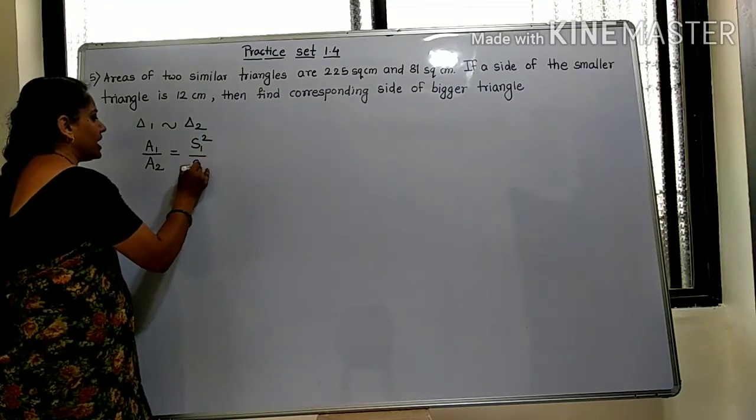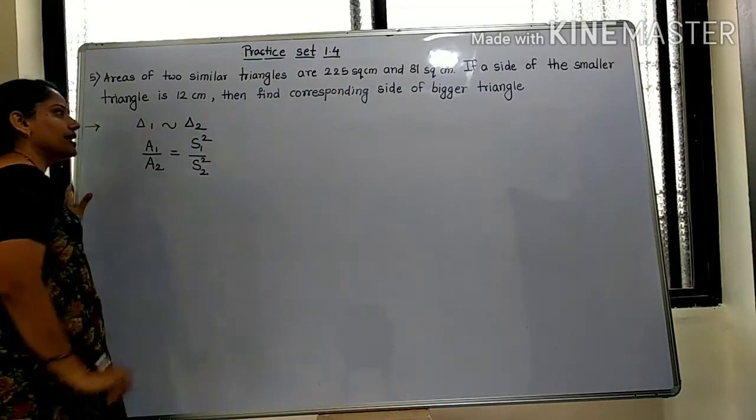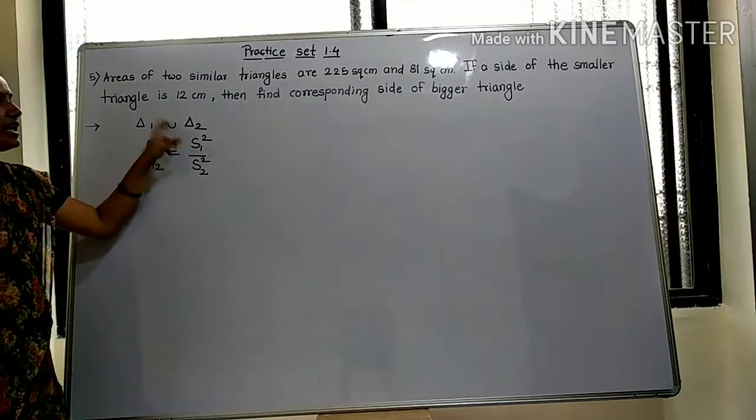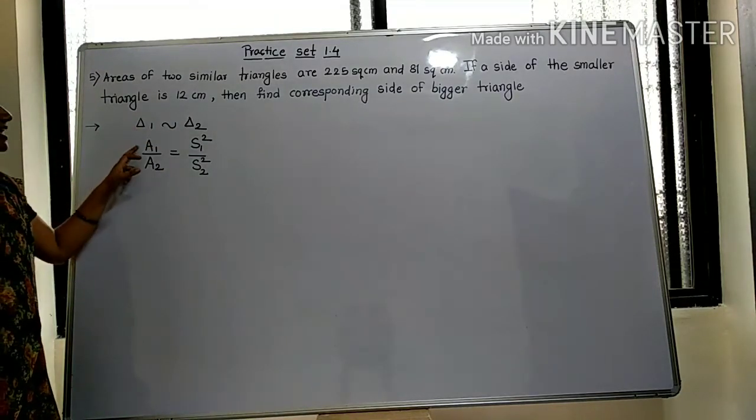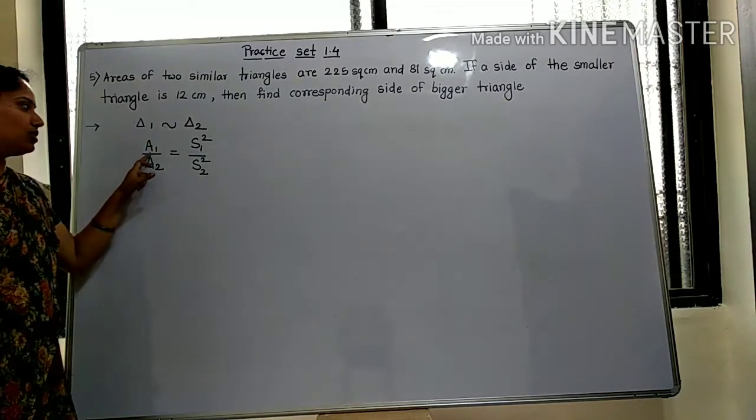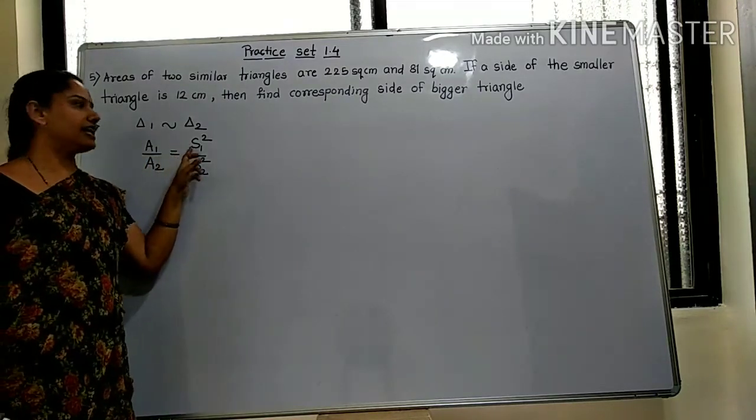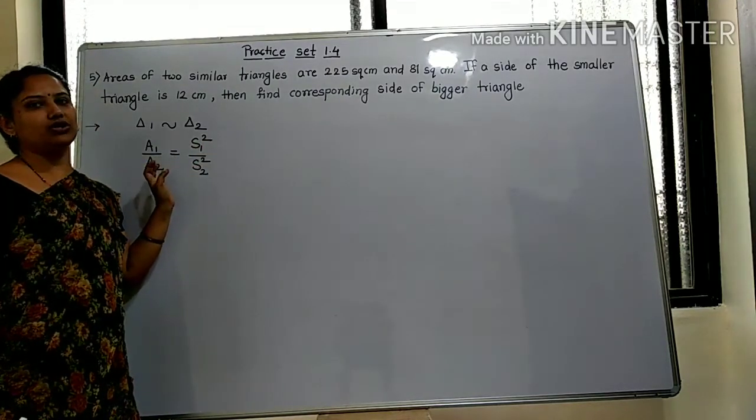This means when 2 triangles are similar, then the ratio of their areas equals the ratio of the squares of their corresponding sides.